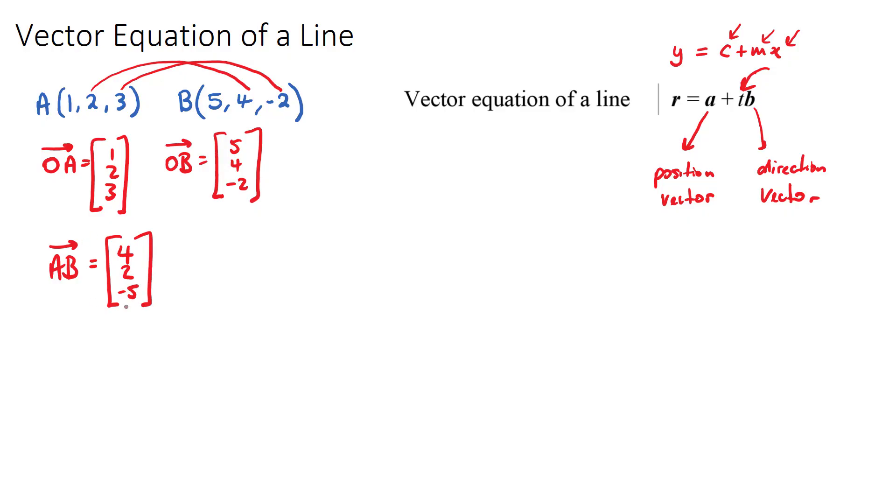Okay, so that's all we need. We need a direction vector, which is this, and we need a position vector, which we can choose either OA or OB.